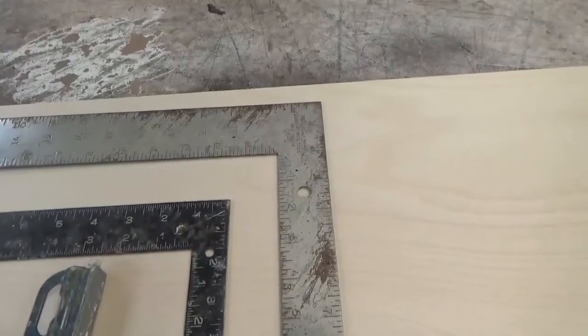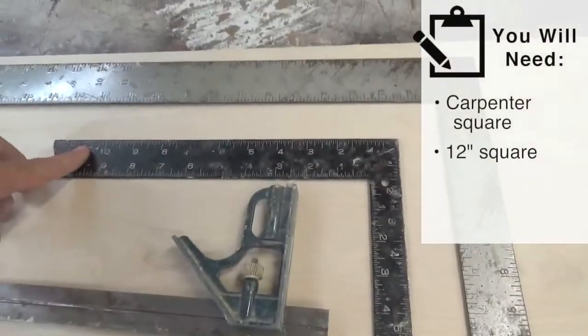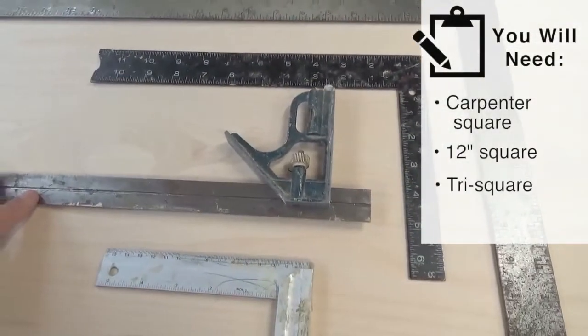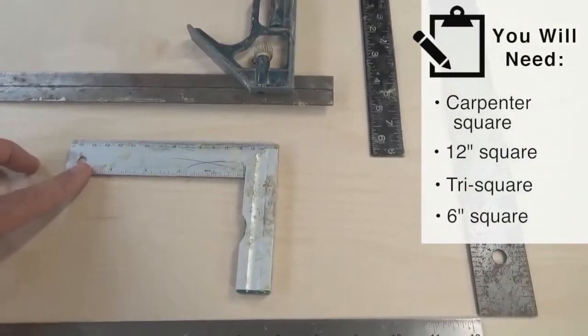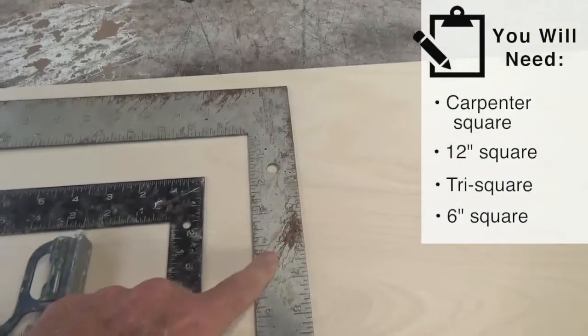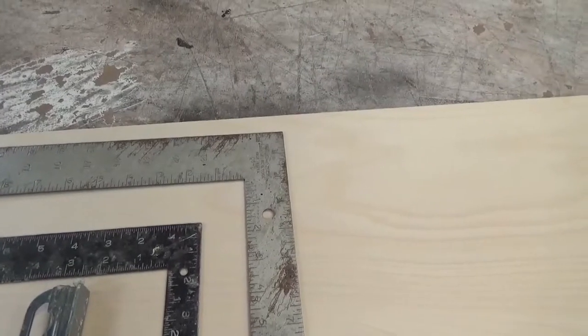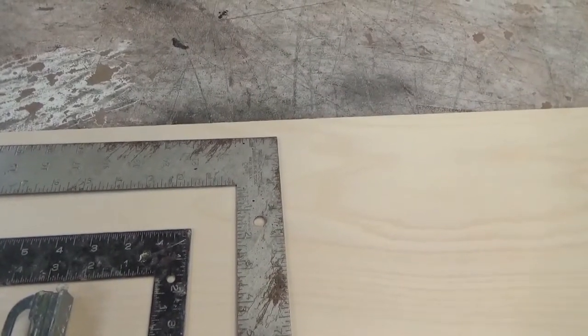You need squares: carpenter square, 12 inches, very useful. Tri-square, used occasionally. A little six-inch square is also useful. Carpenter squares - when you go buy one, always pull them off the shelf and check them for square against something that you know is square in the store. Get the one that's as close as you can get. They're notorious for being out.